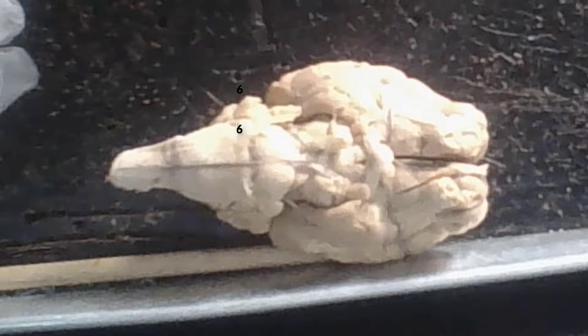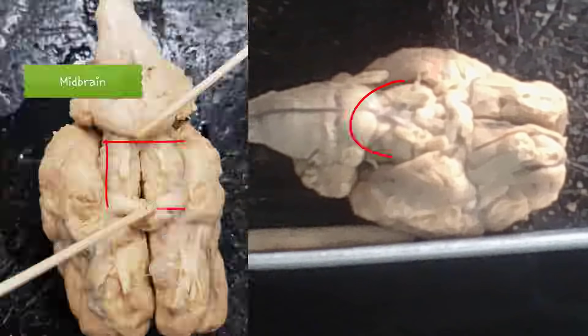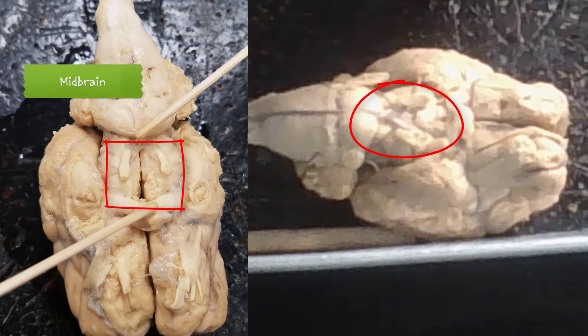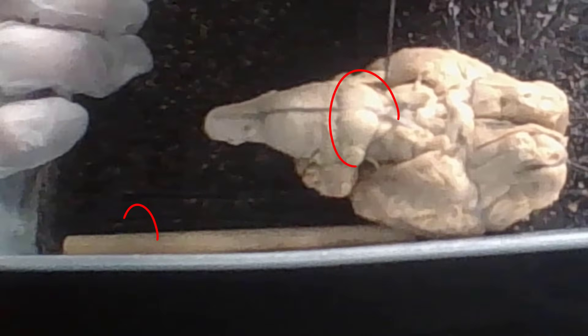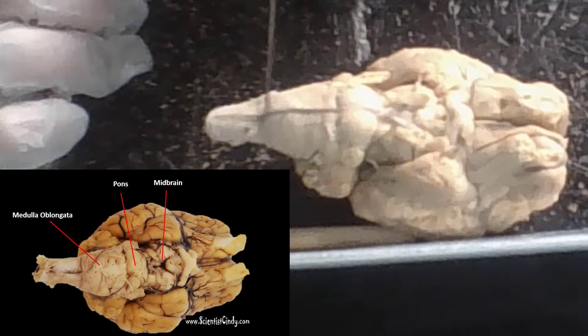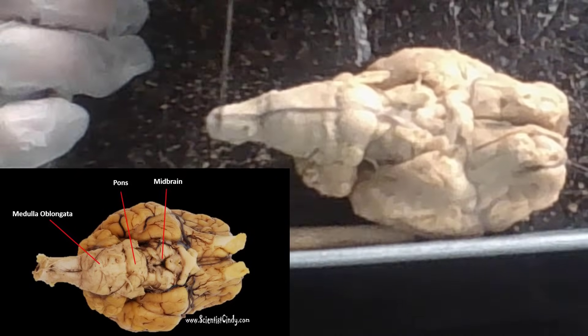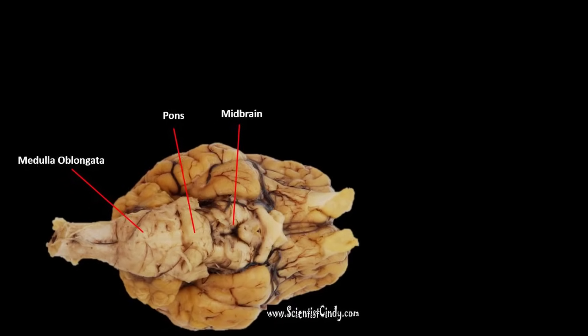From the inferior view, this entire region is the midbrain, which is part of the brainstem. This area here is the pons — it's much easier to recognize from this view, with its characteristic bulge. After the pons, from here to here is the medulla oblongata, and from there down is the spinal cord. And that is the brain!